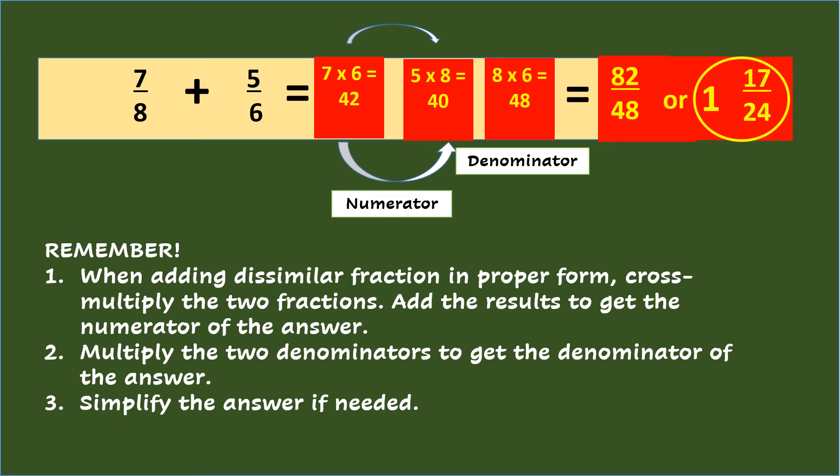Remember: when adding dissimilar fractions in proper form using cross-multiplication, cross-multiply the two fractions, add the results to get the numerator of the answer, multiply the two denominators to get the denominator of the answer, and simplify the answer if needed.